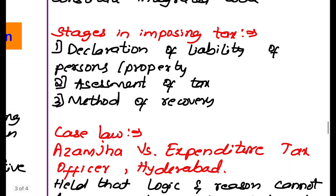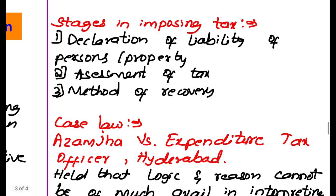Stages in imposing tax: first, declaration of liability of persons or property; second, assessment of tax; and third, method of recovery — how to recover the tax.